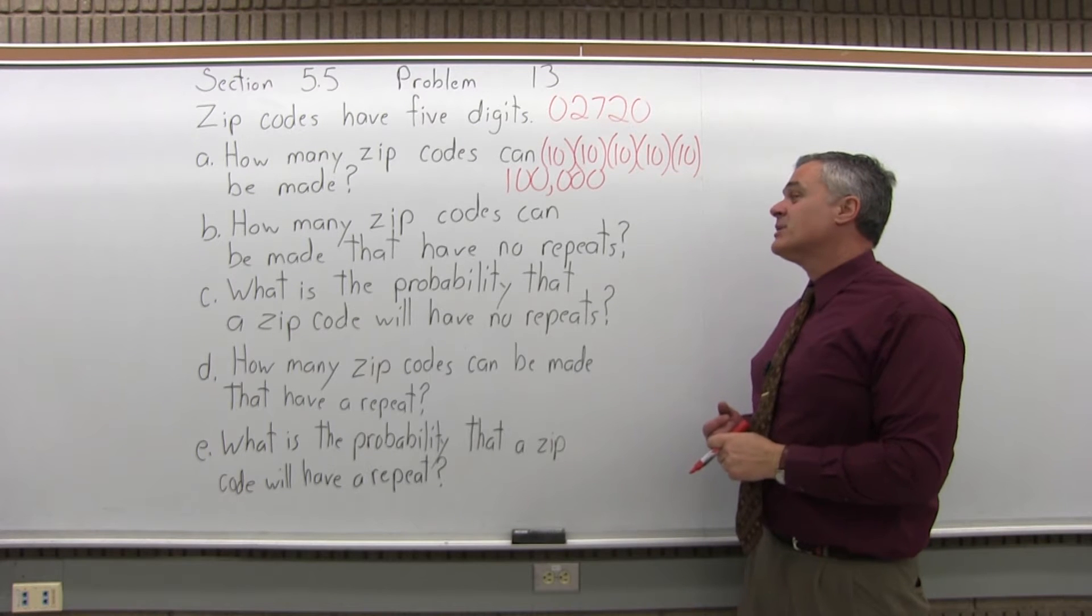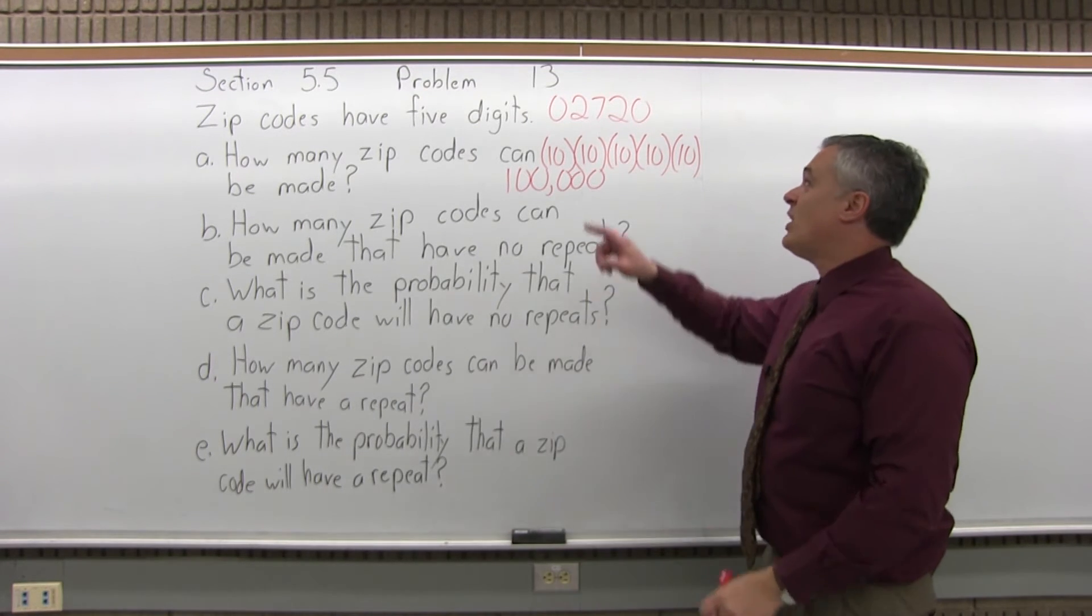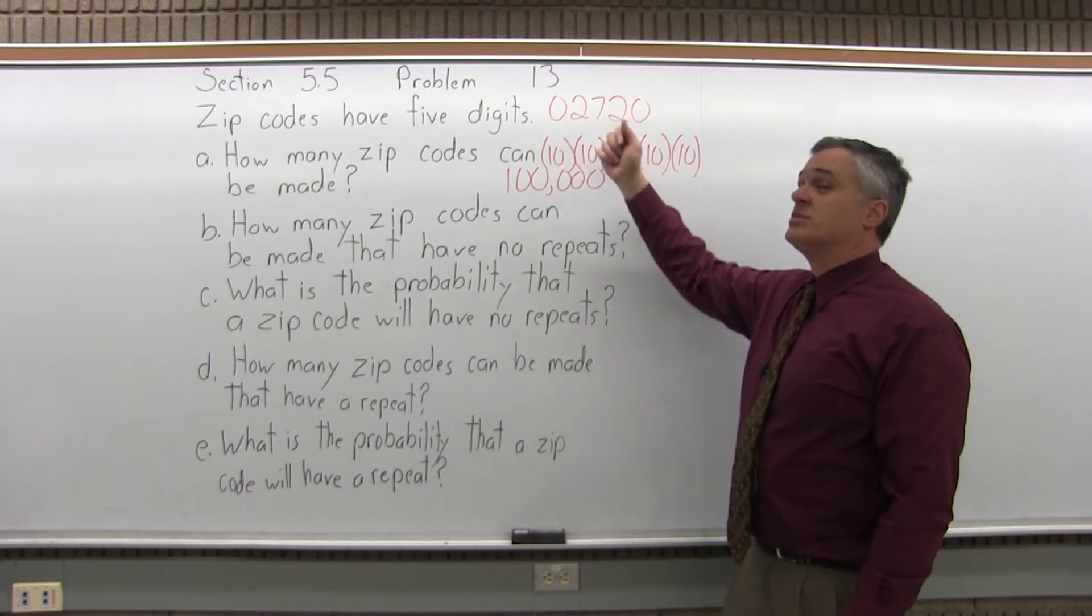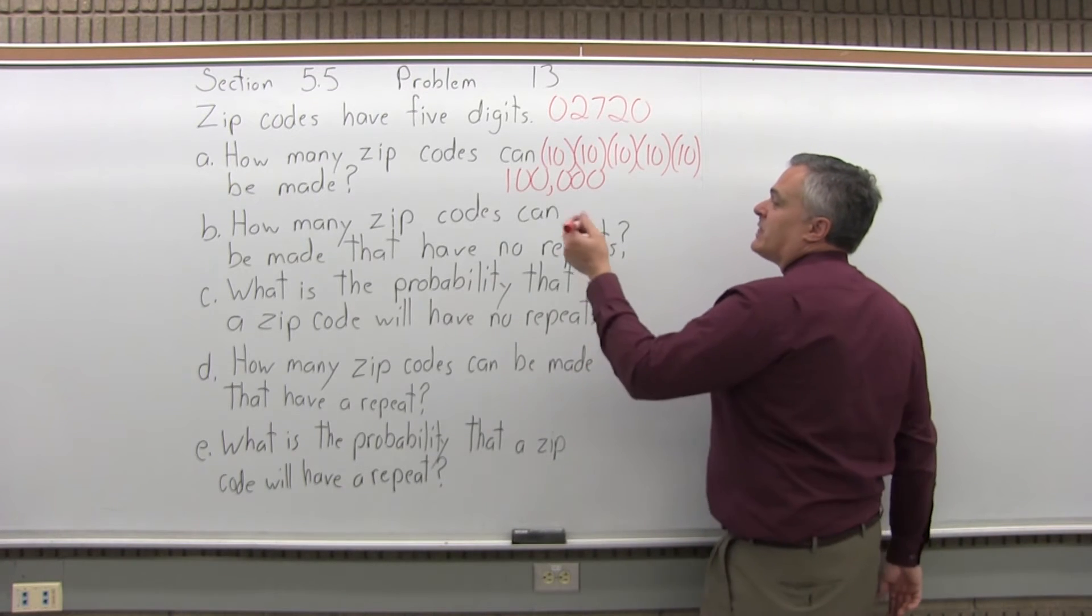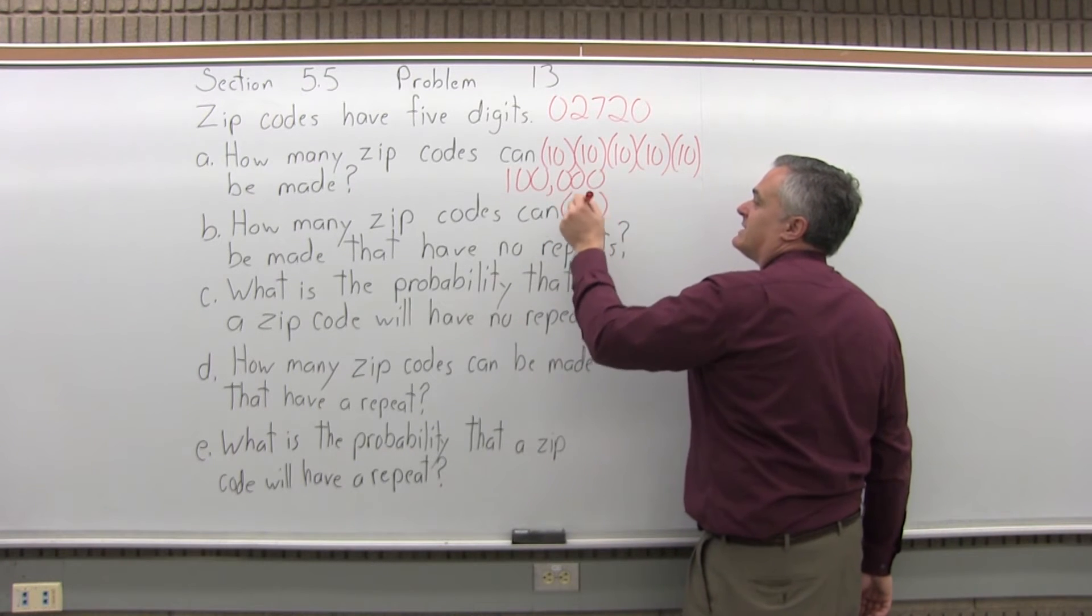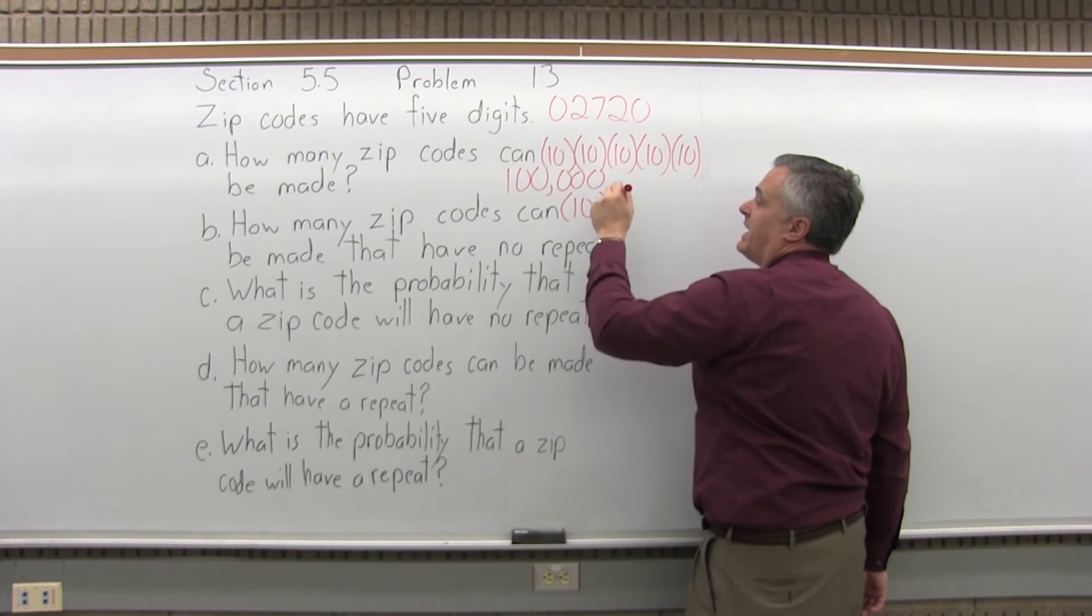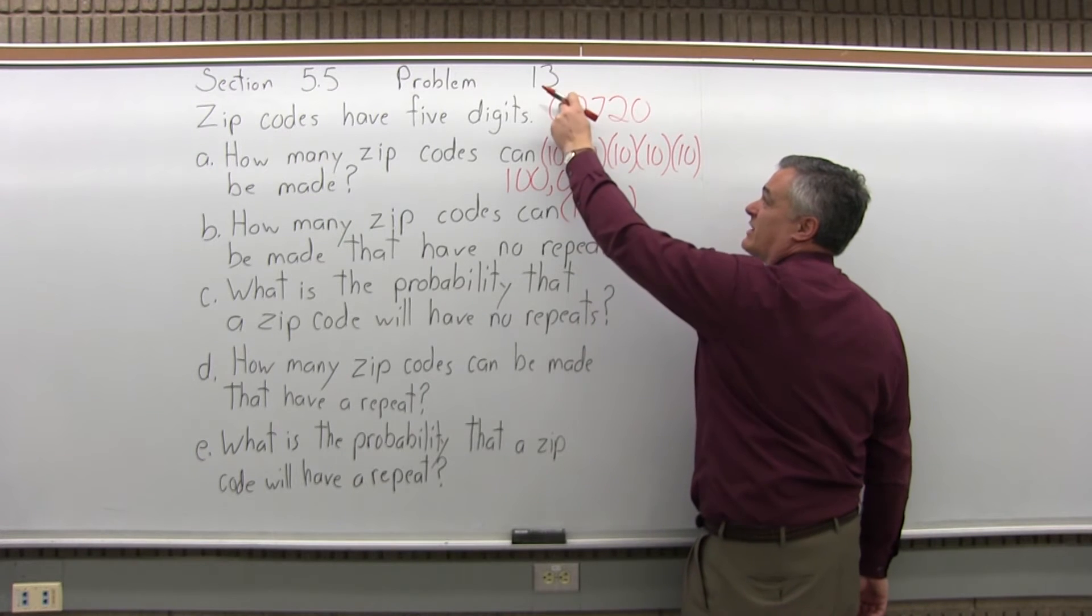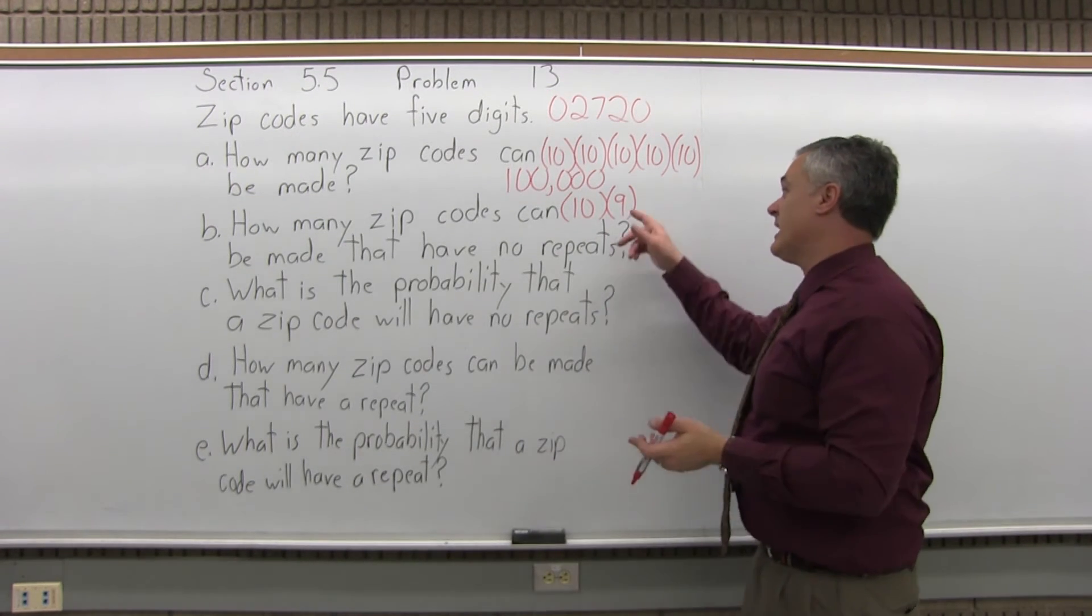Part B, how many zip codes can be made that have no repeats? So Fall River's zip code does have a repeat. Zero is repeated, and also two is repeated. So how many can you make that have no repeats? Well, go through your five-step process. At step one, you would still have ten choices for the first digit. But now, if you're not going to have repeats for the next digit, you're down to nine. So if you start with a zero and there's no repeats, you can't use zero again. So you have nine choices.